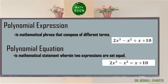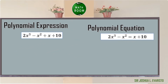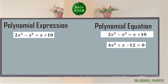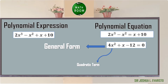The best way to identify whether a given problem is an expression or an equation is: if it contains an equal sign, it is an equation; if it does not contain an equal sign, it is just an expression. Another example of a polynomial equation is 4x squared plus x minus 12 equals 0, which shows the relationship between the polynomial expression and 0. This polynomial equation is in its general form since the terms are ordered from the biggest exponent to the lowest.